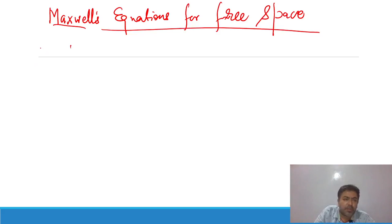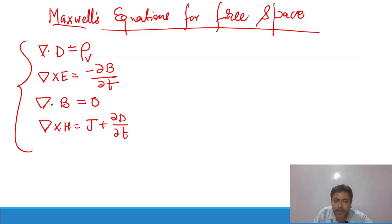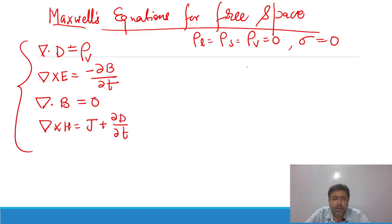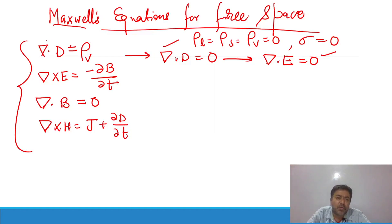The four point-form Maxwell equations are: ∇·D = ρv, ∇×E = −∂B/∂t, ∇·B = 0, and ∇×H = J + ∂D/∂t. For free space, no charges exist — line charge density, surface charge density, and volume charge density are all zero, and conductivity is also zero. So the first equation becomes ∇·D = 0. Since D = εE, dividing by ε gives ∇·E = 0. This is the first Maxwell equation for free space.